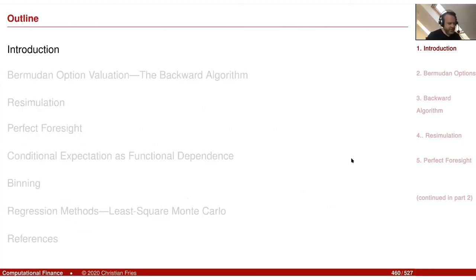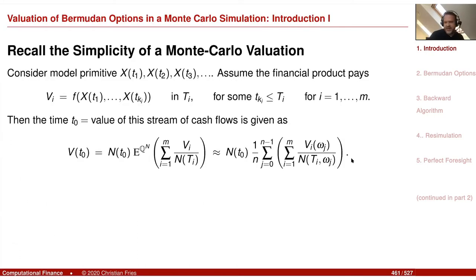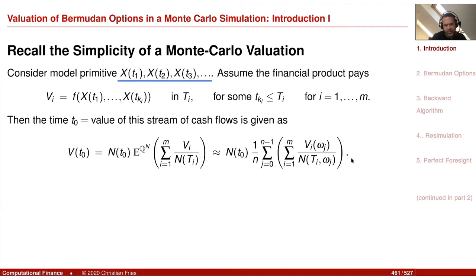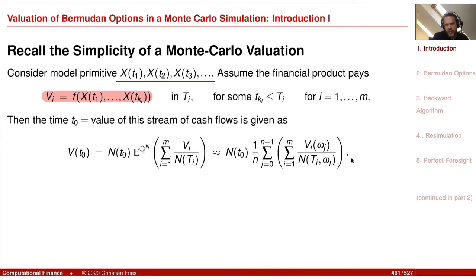Let's recall the simplicity of the Monte Carlo valuation for financial derivatives. We simulate some model primitives like stock prices, foreign exchange rates, interest rates — whatever could be part of this vector x — and we simulate this stochastic process, our market. For a European option, the payoff is given as a function of these simulated quantities.